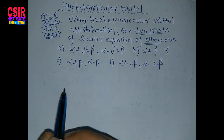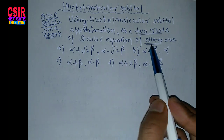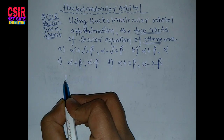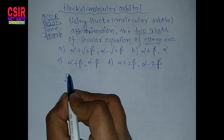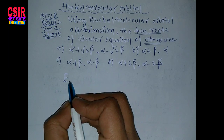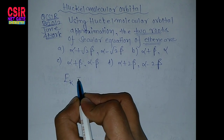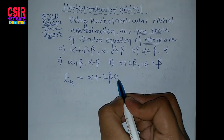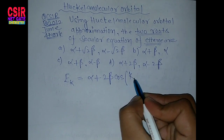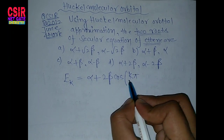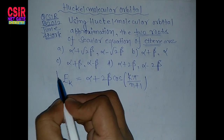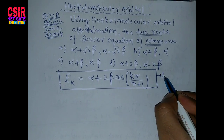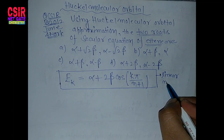How to calculate the roots of the secular equation — for that, I am writing this energy E, and this is a constant k. The formula is: E equals alpha plus 2 beta times cos of (k·π / (n+1)). This is the equation for linear molecules.